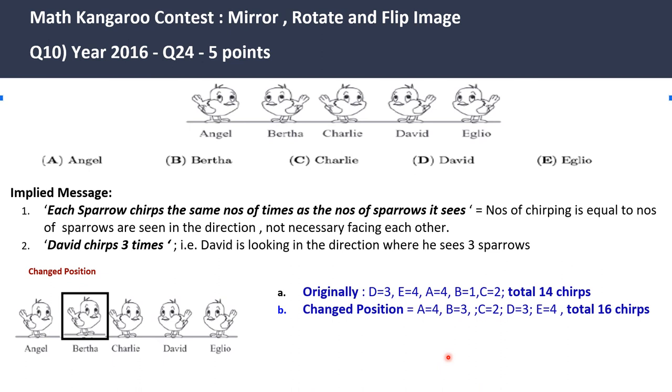To find out which bird can move, which bird rotated her side to increase the chirp, I will select Bertha. Answer is B.